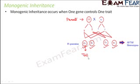Taking the example of Mendel's pea plant experiment, even with one dominant allele from either parent, the child is going to be tall, which is the dominant phenotype. This is the basic characteristic of monogenic inheritance.